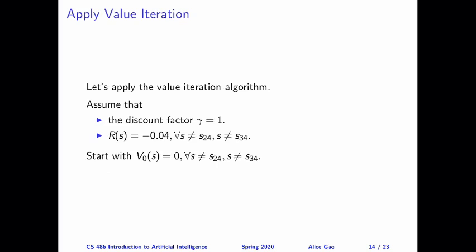Also recall the numbers of some of the parameters I introduced a couple of videos before. We will use the discount factor equal to 1. We will assume that the immediate reward of entering any non-goal state is minus 0.04. And when applying the value iteration algorithm, for the 0th iteration to start, we will assume all of our estimates are 0.